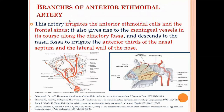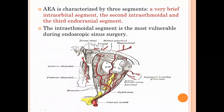The anterior ethmoidal artery irrigates the ethmoidal cells and also the frontal sinus. Apart from that, it also gives rise to anterior meningeal branches in the course along the olfactory fossa, and descends to the nasal fossa to irrigate the anterior portion of the nasal septum and the lateral wall of the nose. It also gives rise to part of the cribriform plate process. The artery is characterized by three segments: a brief inter-orbital segment, then the intracranial segment, and then the endocranial segment. The intracranial segment is most vulnerable to injury during sinus surgery.